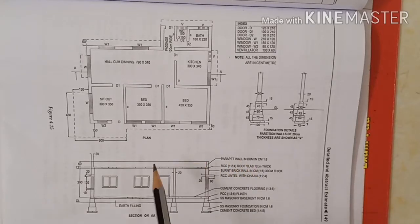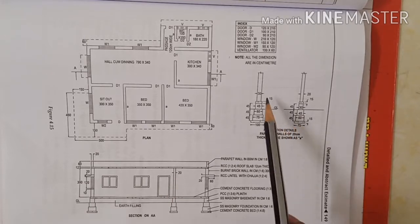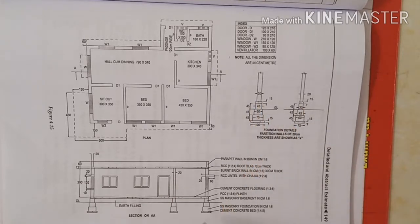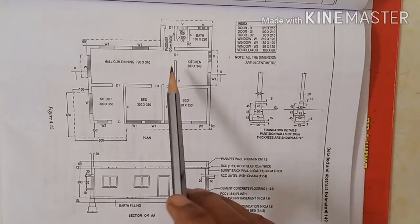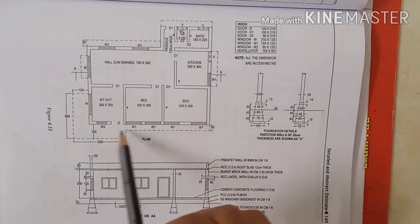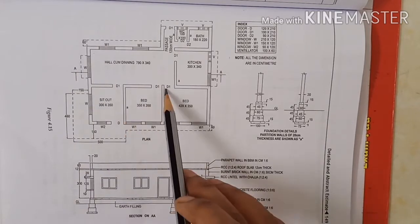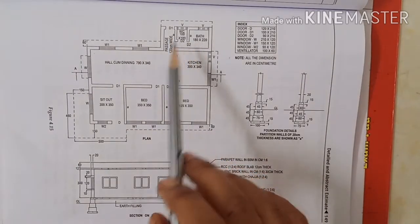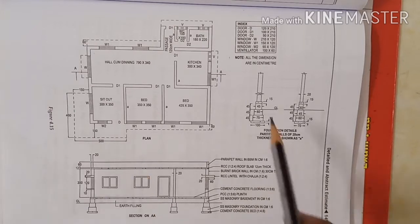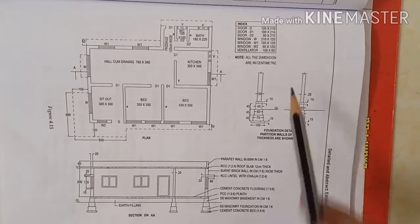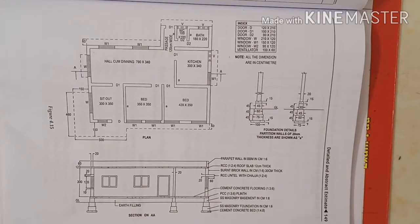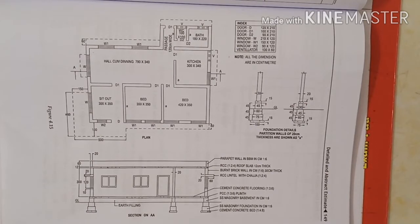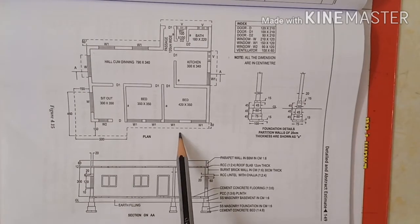In this session we will estimate the quantities of a building having two wall foundations. The outer walls are 30 centimeter and the inner walls are 20 centimeter. The foundation is given for both the 30 cm wall and 20 cm wall. I hope everyone knows how to calculate the center line length.